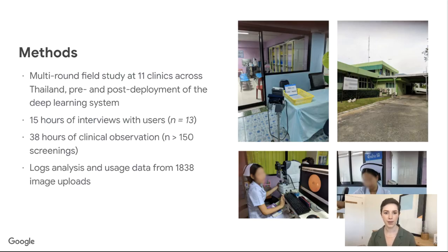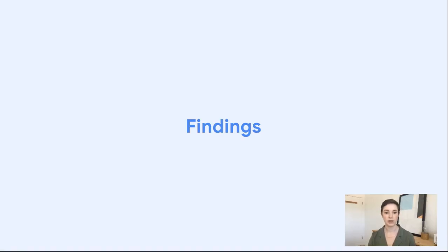We know that for our model to be successful, it not only needs to be accurate, it needs to meet people's needs. In this case, we had to make sure this tool was going to work for the nurses that would be using it every day and the patients that it would service. To do this, we took a human-centered approach. Alongside the prospective study evaluating system accuracy, we conducted a human-centered study involving field research at 11 clinics across Thailand over a period of eight months. This research took place both before and after the deployment of the deep learning system. Our data included interviews, observations, as well as logs analysis and usage data of the system. Today I'll review some of the findings from our research; for the rest, I encourage you to take a look at the full paper.